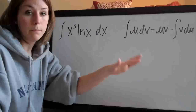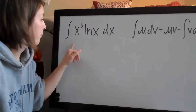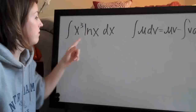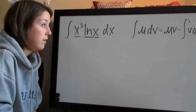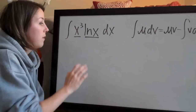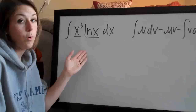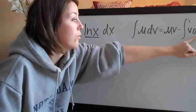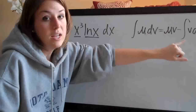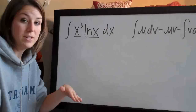So let's go ahead and try this example. The first thing we have to do is assign u to one of these terms and dv to the other — we're looking at x cubed and natural log of x. The way I like to pick is to identify something that will become simpler when you take its derivative for u, because when we plug du back in we want the inside of that integral to be simpler than what we have now.